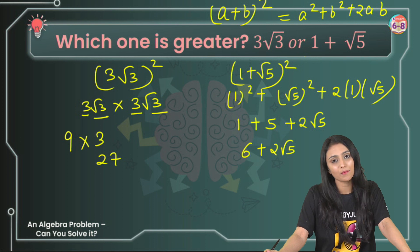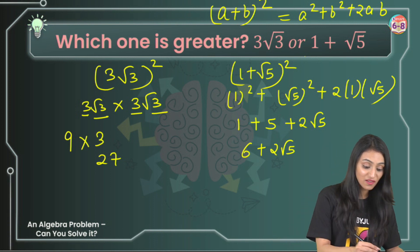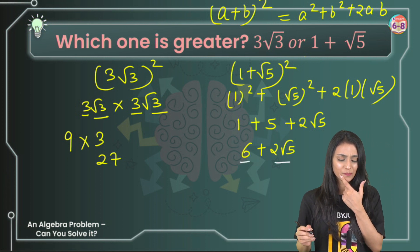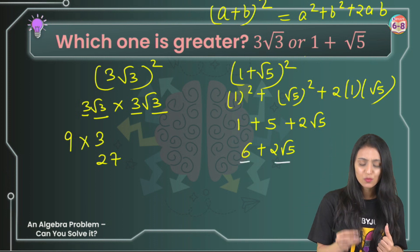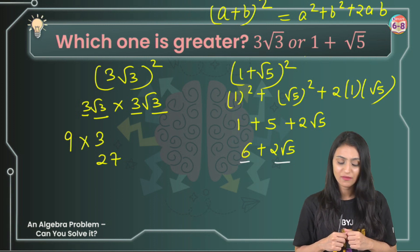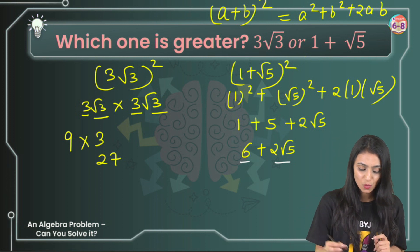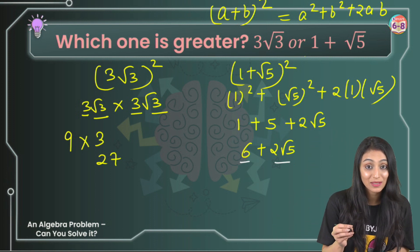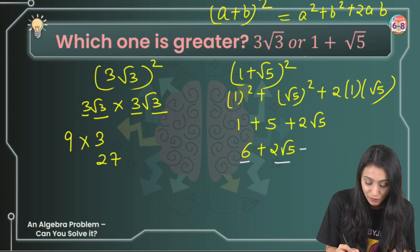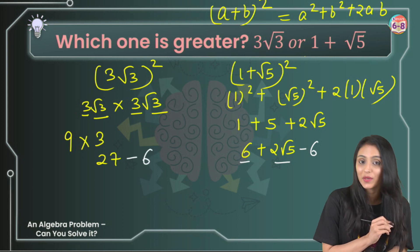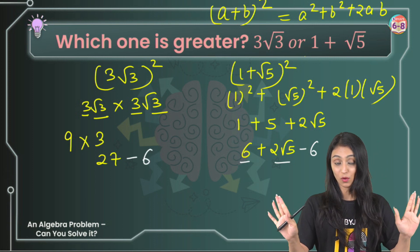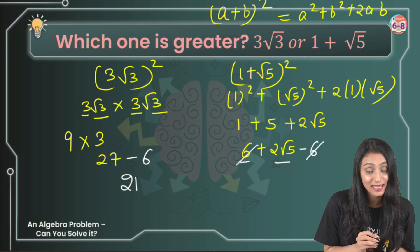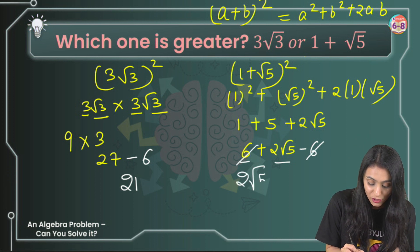Now how do I compare it? Again, we are stuck. We have 27 here, and we have a number over here, 6+2√5. Let's remove this 6 from here. If I'm removing 6 from here, I'll subtract 6 since it is added here. If I'm subtracting 6 from here, I'll have to subtract 6 from here as well. Same operation on both of them. So that's going to be 21, and here 6 and 6 will get cancelled out. I will only be left with 2√5.